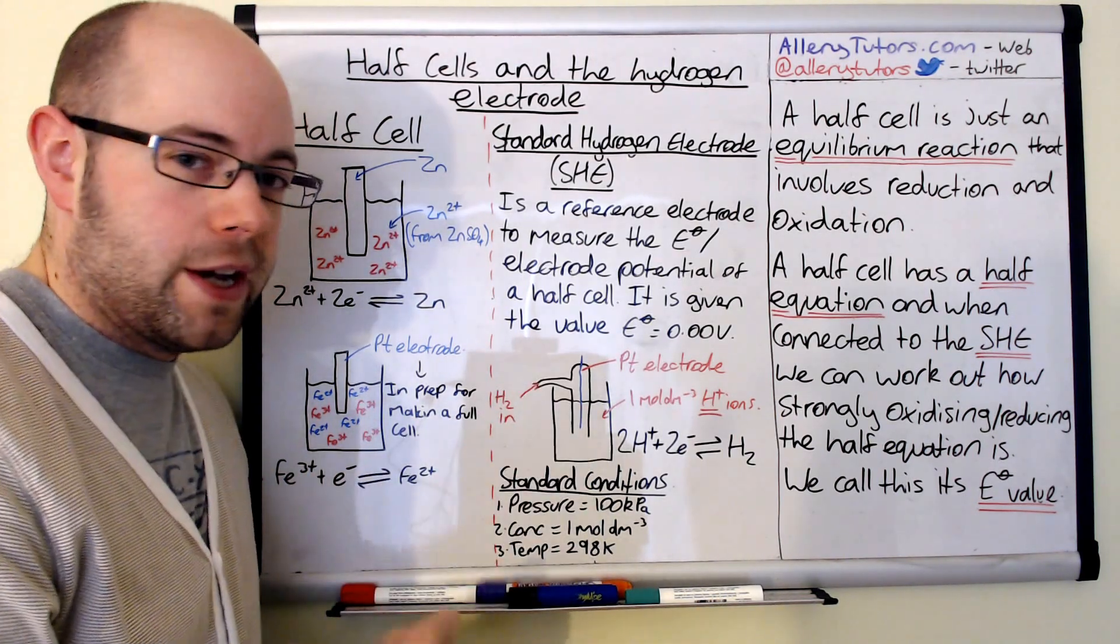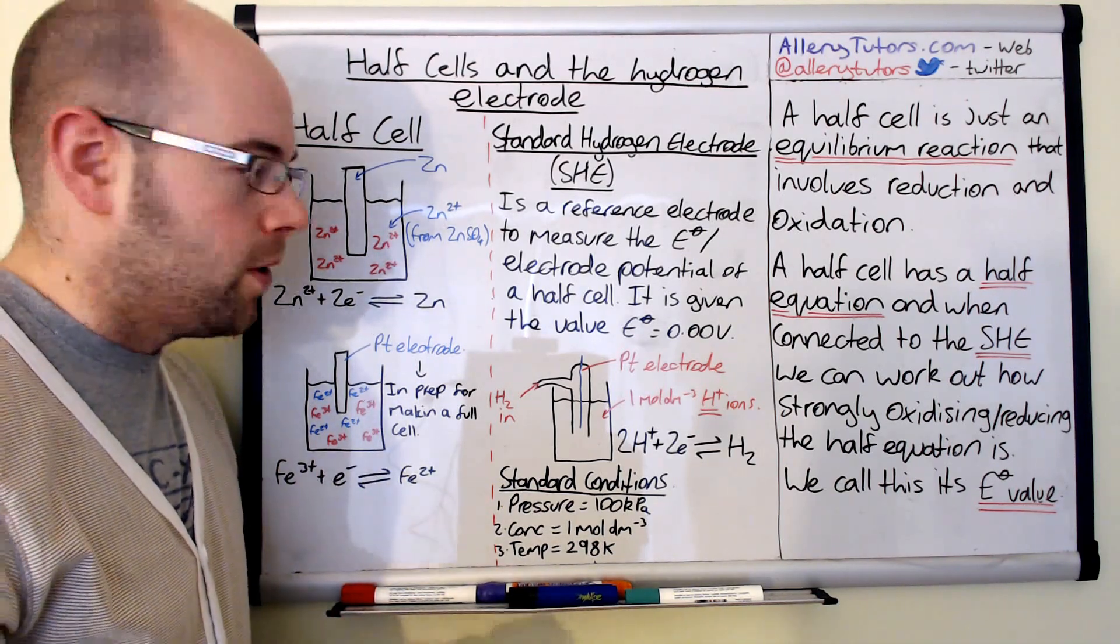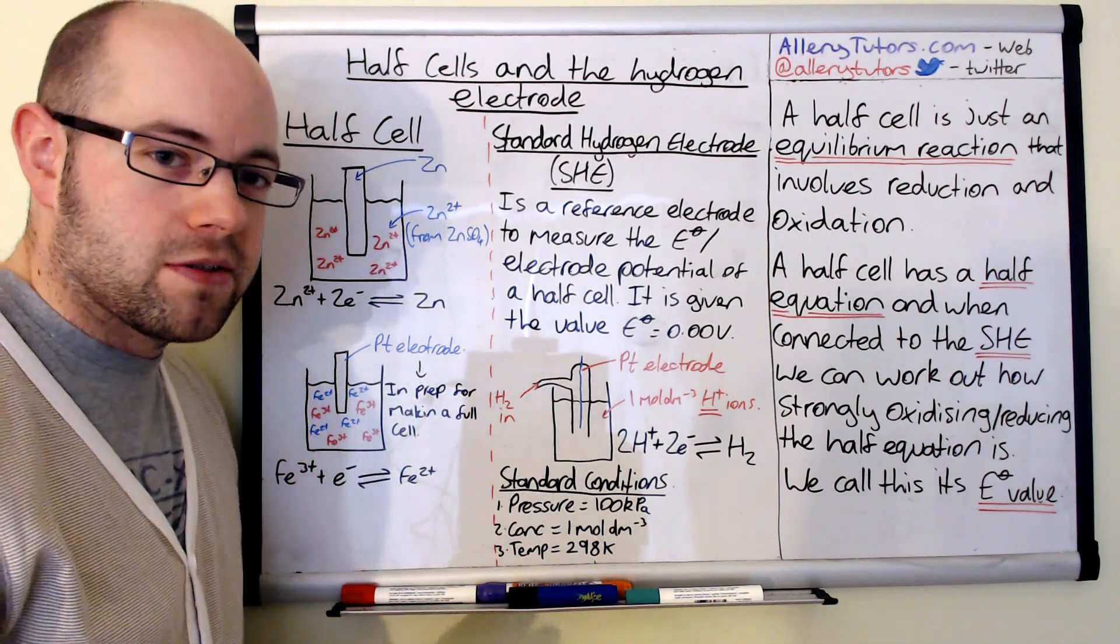Because neither of these are solid, we need to have an electrode to conduct the electricity. So the electrode of choice is platinum, again, for the reasons that I said before. It's inert, and it's a good conductor of electricity.